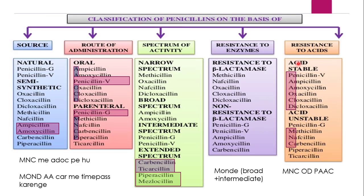The next class is resistance to acids. As seen in the stability of penicillin video, penicillins can also be easily hydrolyzed by acids and alkalis. This resistance to acid class is similar to that of resistance to enzyme. Acid stable means comparatively acid stable — these are resistant to acids. And acid unstable means acid non-resistant.